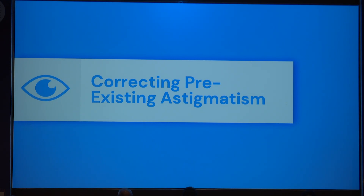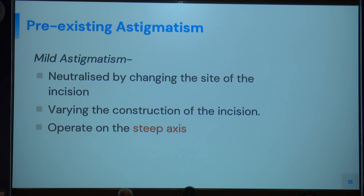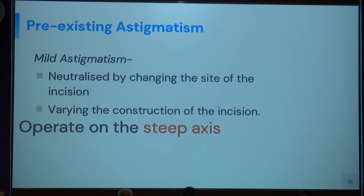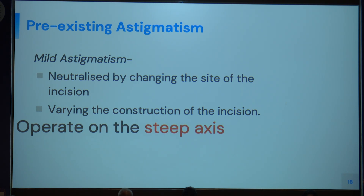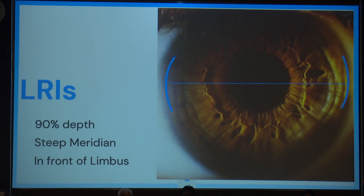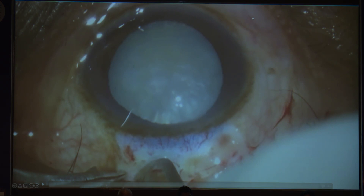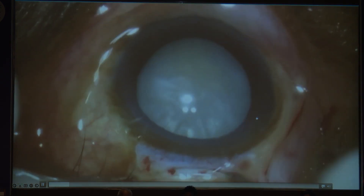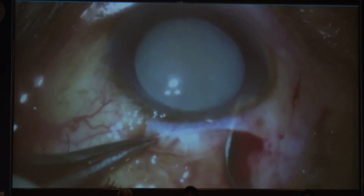To correct pre-existing astigmatism: in mild cases, we operate on the steeper axis. We can neutralize by changing the site of incision — for against-the-rule astigmatism we use a temporal incision; for with-the-rule we use a superior incision. We can also use limbal relaxing incisions (LRI), which are made just 0.5 mm in front of the limbus at 90% depth, usually 600 microns. A guarded knife is used, placed on the steeper meridian. In this case example, we make a superior SICS incision and provide a limbal relaxing incision to cancel it out.